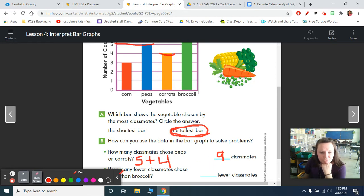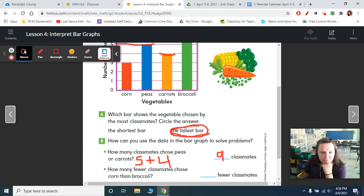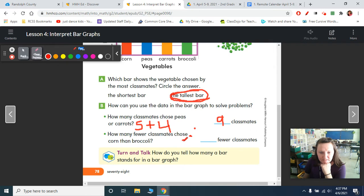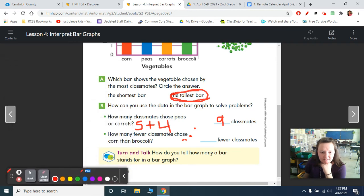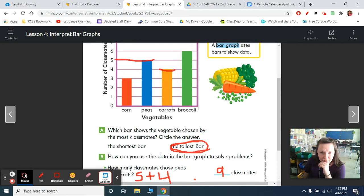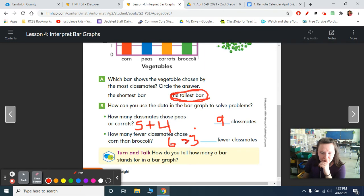Then it says, how many fewer classmates chose corn than broccoli? I've got to move my tool bar out of the way so I can see what I'm doing. Okay, corn, there were three. It won't let me write any lower. I'm going to have to scroll up. Corn, we had three. Why does it not let me write? I guess I've got to put it back down again. It doesn't like being in the wrong one. Okay, three. And then broccoli. My allergies are acting up. And then broccoli was six. So you had six minus three, which is three.